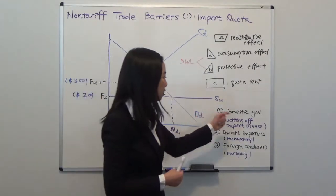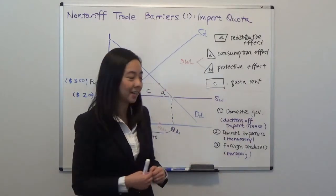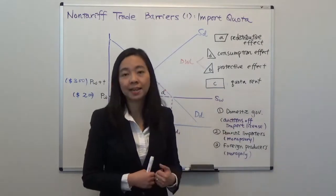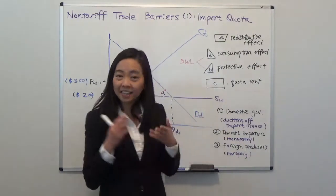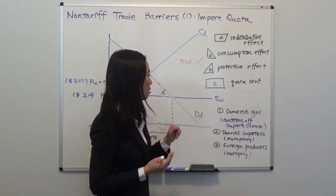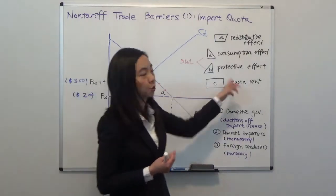Now, suppose the government auctions off the import license saying that, you can import but you have to buy a license from me and the highest bidder will win the license. Then in that case, the domestic government is going to get the quota rent.